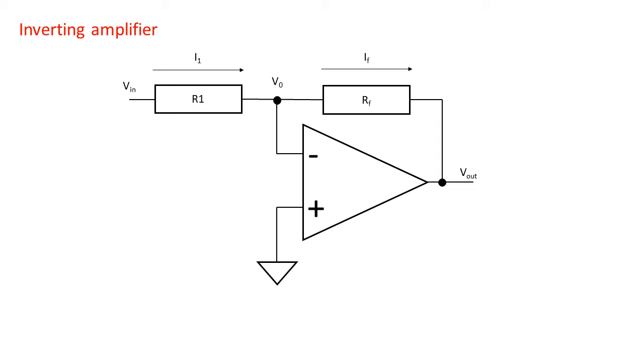Kirchhoff's current rule says that all current entering a node has to leave that node, the current can't just disappear. It also cannot enter the op amp via the inverting input because it has a very big almost infinite impedance. So I1 has to be equal to IF.